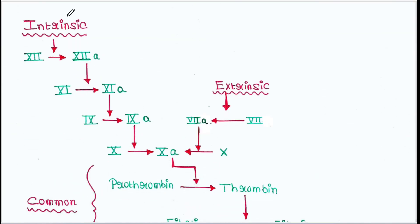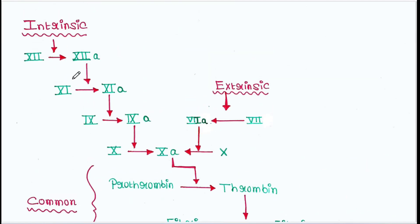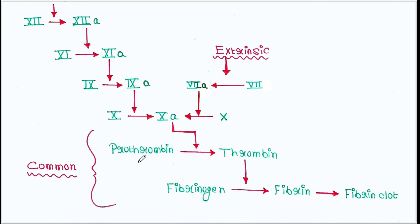This is the schematic presentation you can see here. The intrinsic pathway and extrinsic pathway both activate factor 10A, and then the common pathway ultimately forms the blood clot. This is all about today's lecture. I hope you liked it. Thank you for watching.